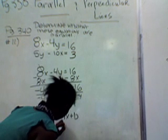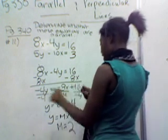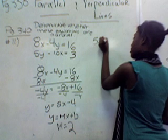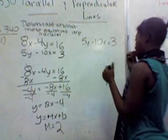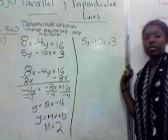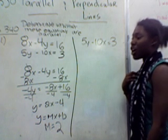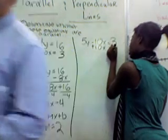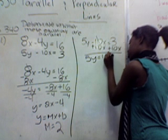And then you do the same with 5y minus 10x equals 3. First thing you do? Kiara, we were waiting to hear from you. We're solving for y. What's the first thing we do? Add 10x on both sides. Good. Add 10x on both sides. And that's 5y equals 10x plus 3. And we're almost there.